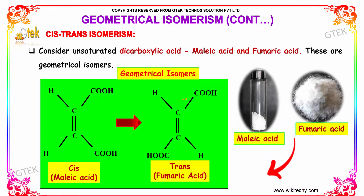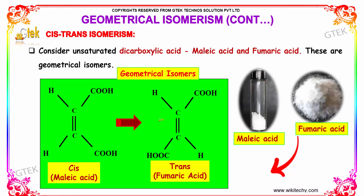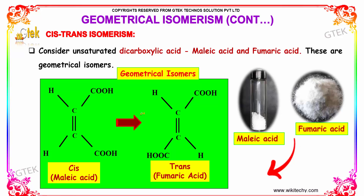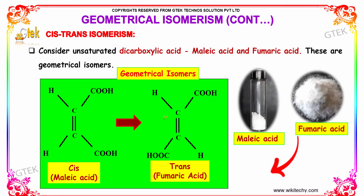Consider an unsaturated dicarboxylic acid — maleic acid and fumaric acid. These are geometrical isomers. Maleic acid is the cis form of the dicarboxylic acid, whereas fumaric acid is the trans form.